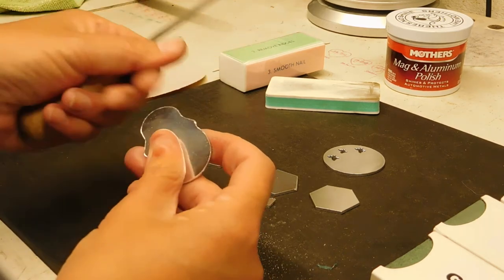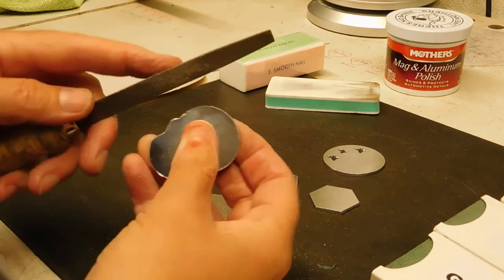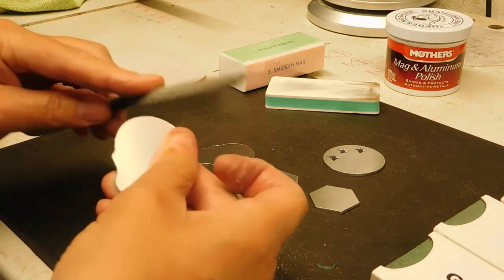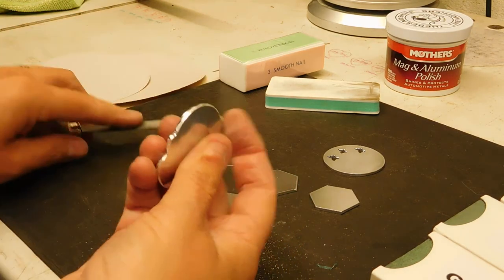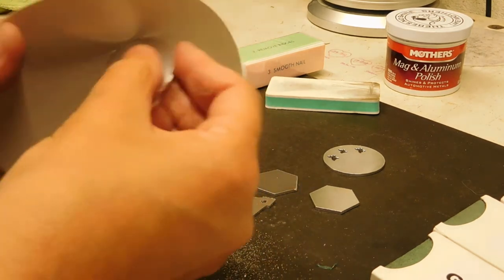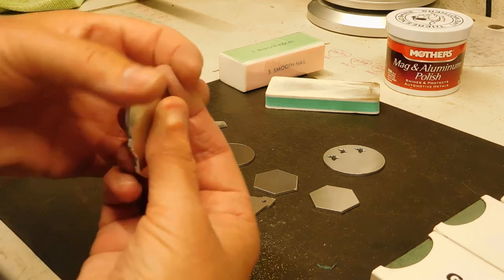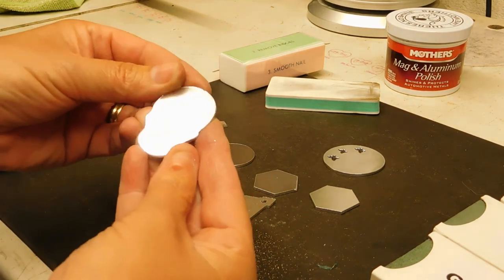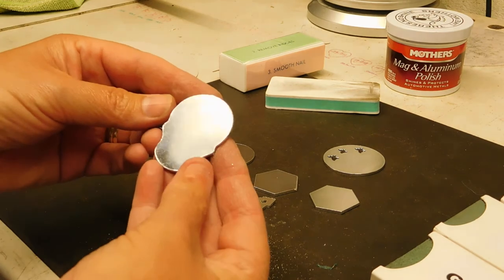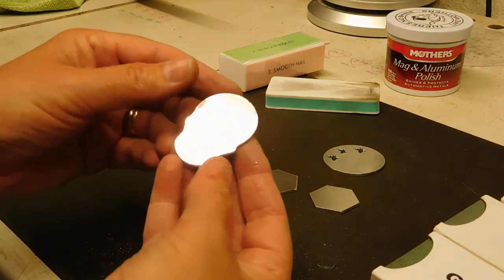Once you've cleaned that down, you can either gently go around it with that, or use normal sandpaper and just go around the edges. What you'll end up with is a nice smooth finish that you can pop in the tumbler or, if you wanted to, hammer around it to give it a different effect.